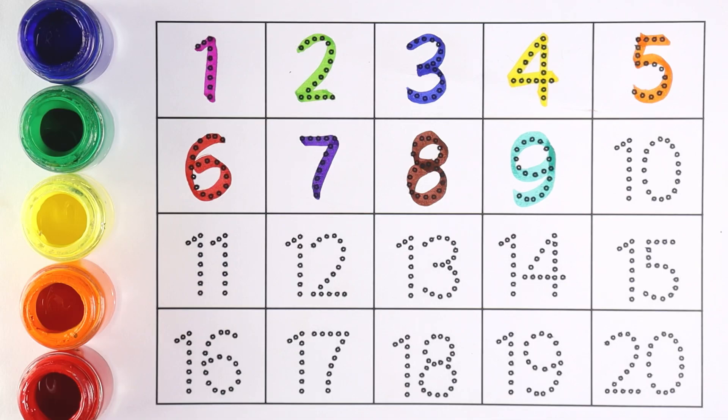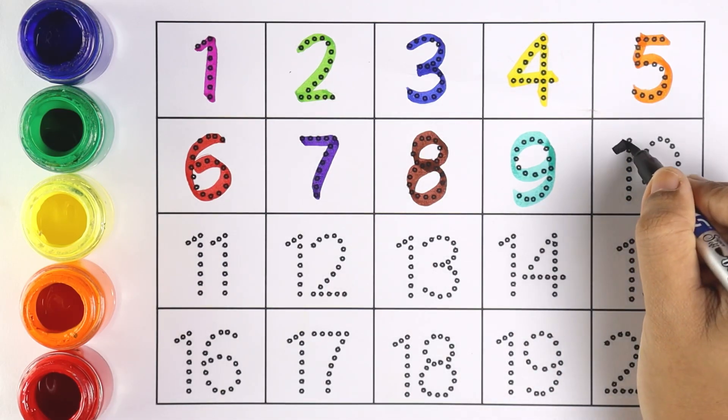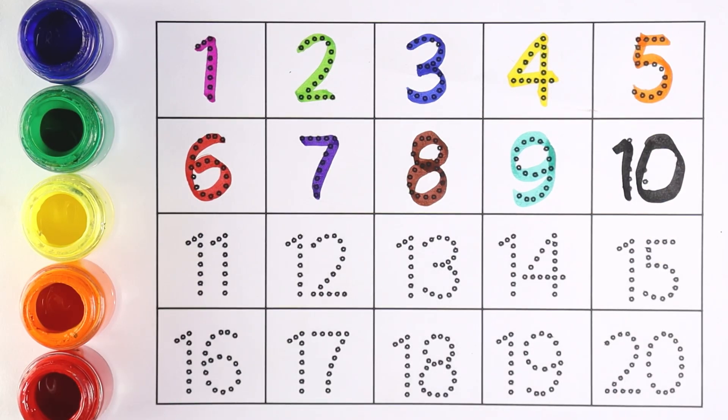Number 8. Very good. Number 8. Number 9. Number 9. Now can you all guess which is this number? It's number 10. 1 and 0 makes the number 10.